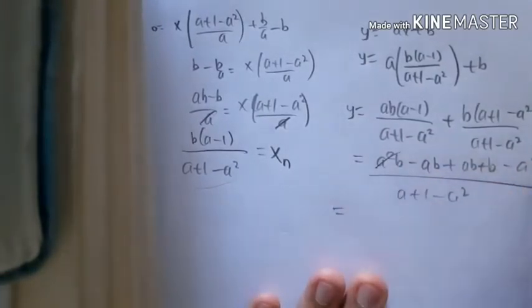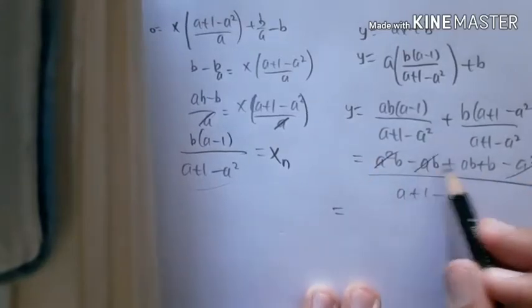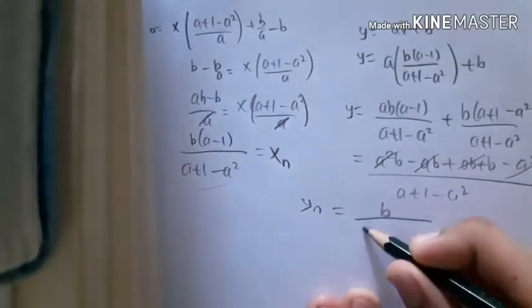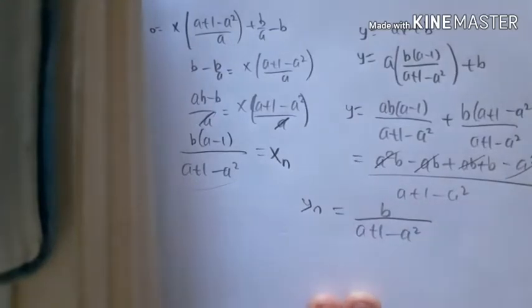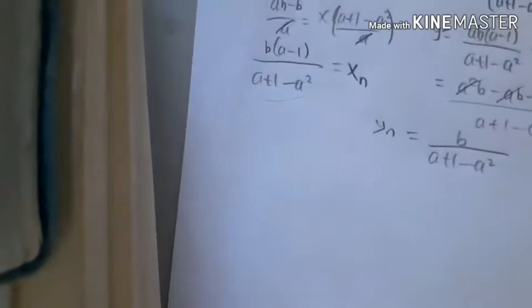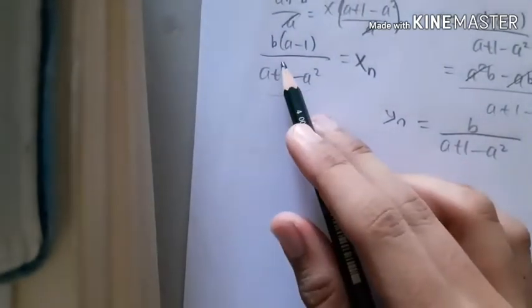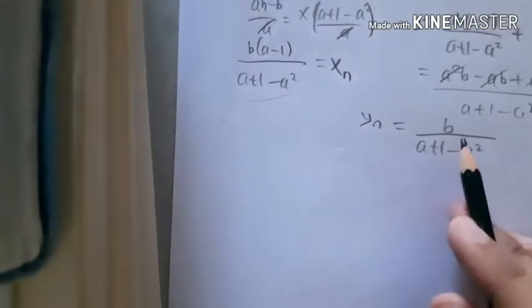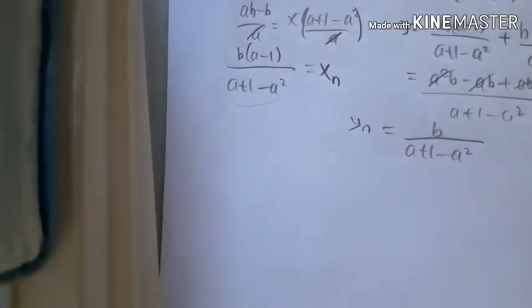Now we can see this is equal to 0 and this is equal to 0. So the answer for y_n is b/(a+1-a²). So in terms of a, b, and n, x_n is b(a-1)/(a+1-a²) and y_n is b/(a+1-a²).